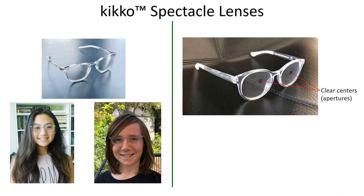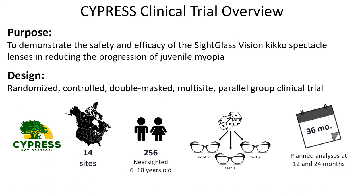Here are the details of the ongoing clinical trial, which is called CYPRESS. It is being carried out in 14 sites in North America. We enrolled 256 nearsighted 6 to 10 year olds. There are three arms: two different therapeutic test patterns and a control, which is the standard of care. It's a three-year study with planned analyses after one and two years. I'm going to show you the results after one year, and we will have the two-year results within the month.